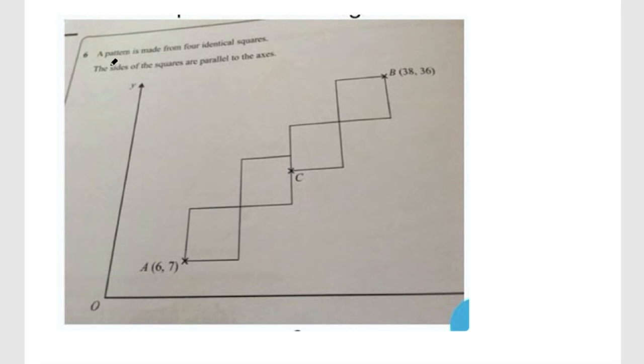So you can see here it says a pattern is made from four identical squares. The sides of the squares are parallel to the axes.